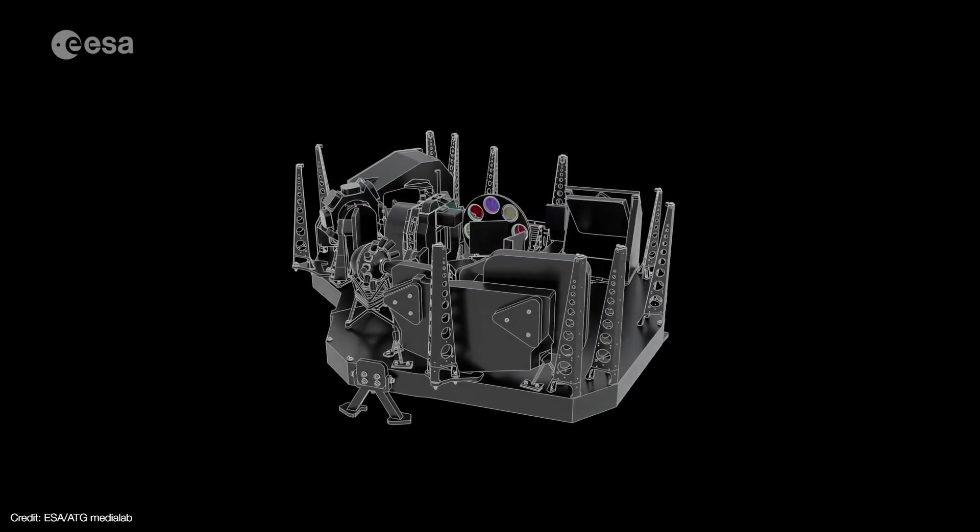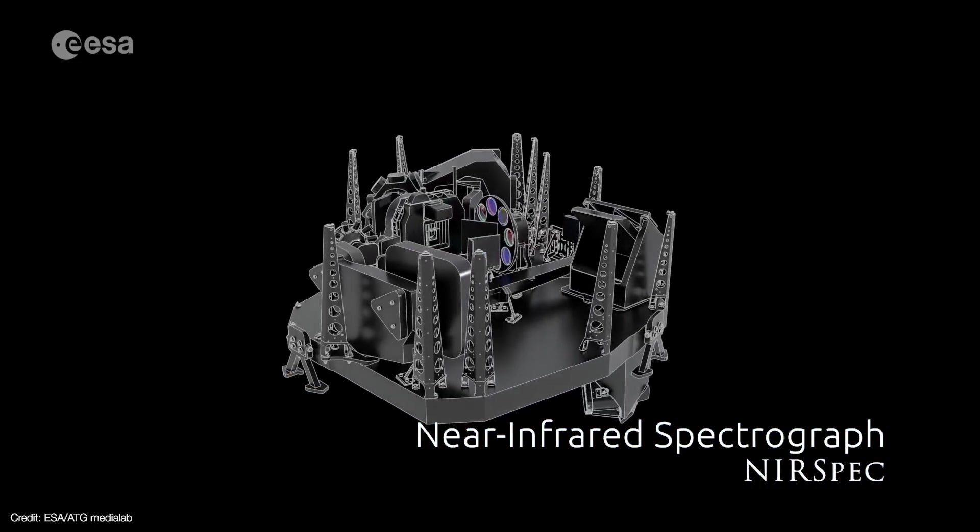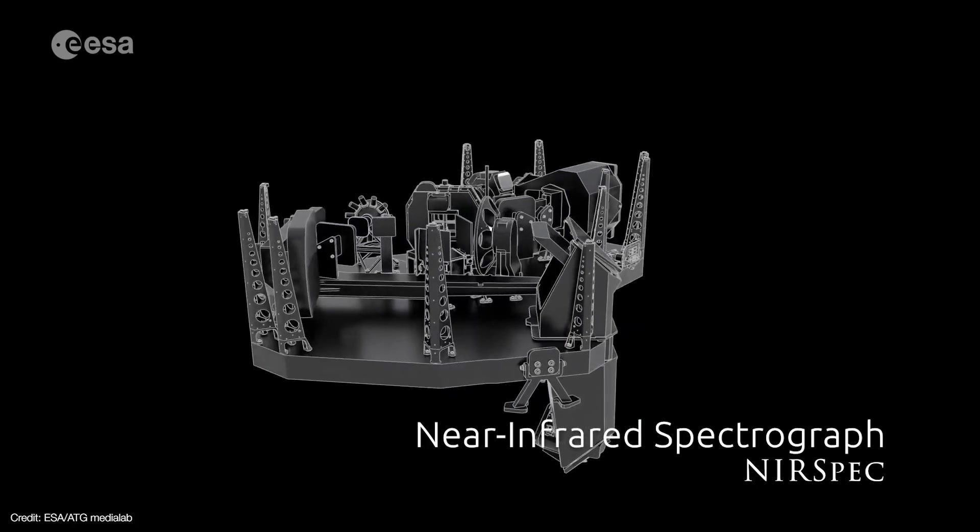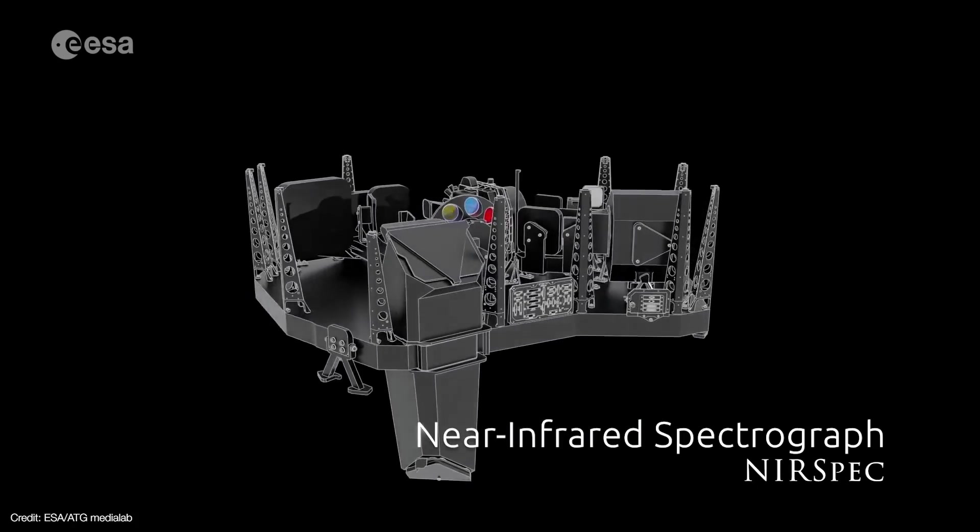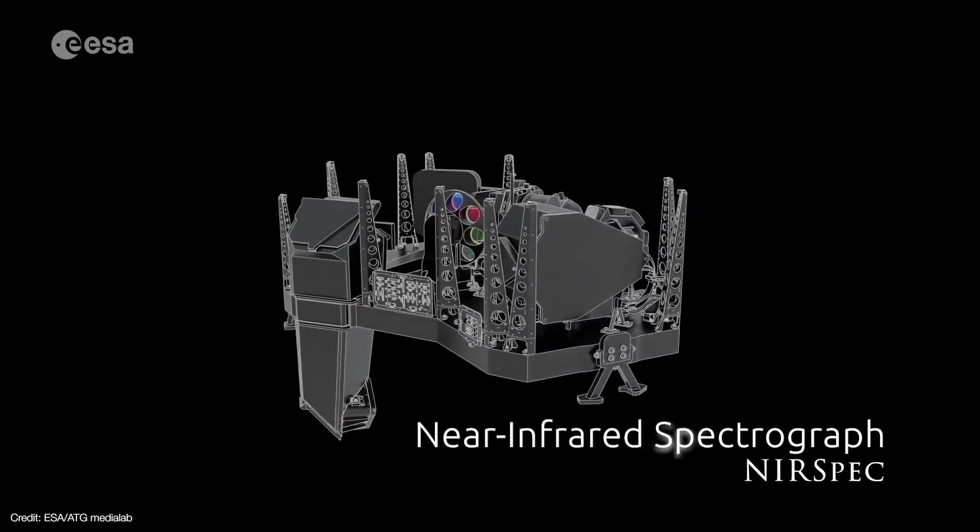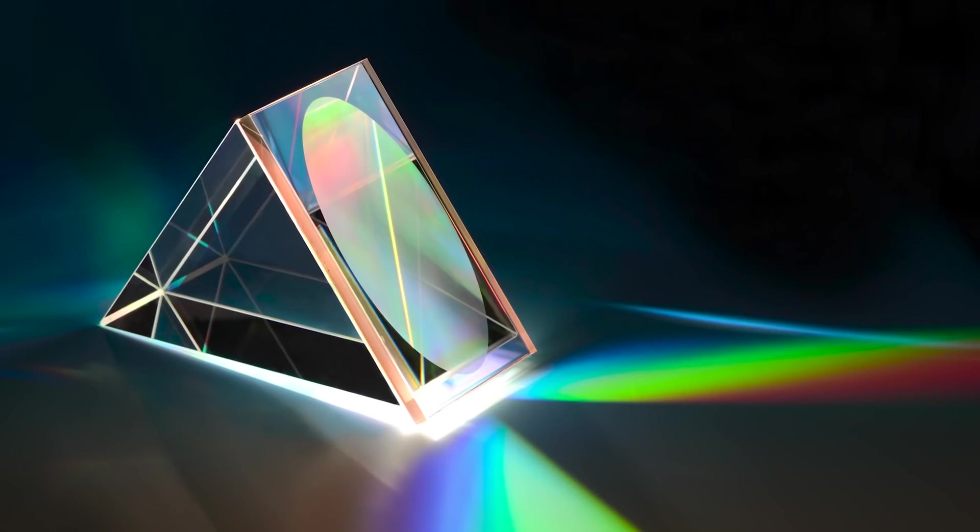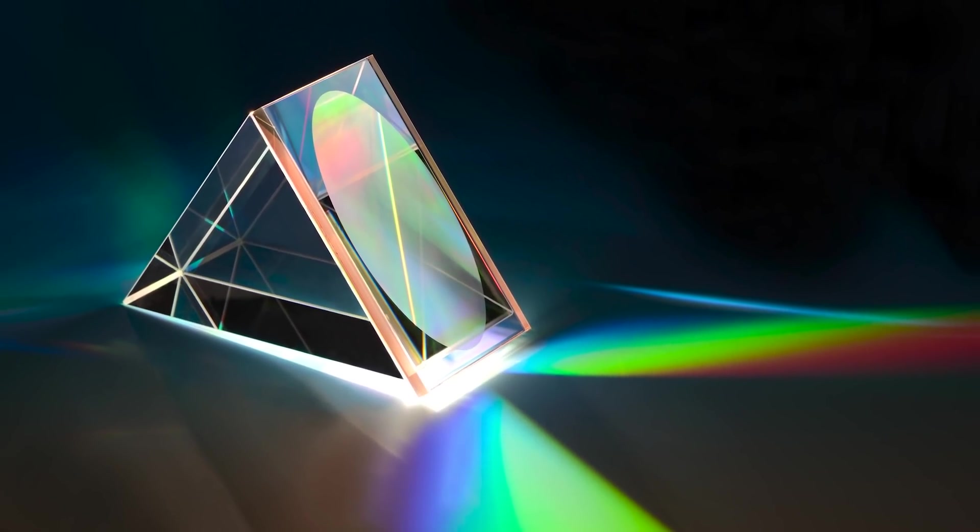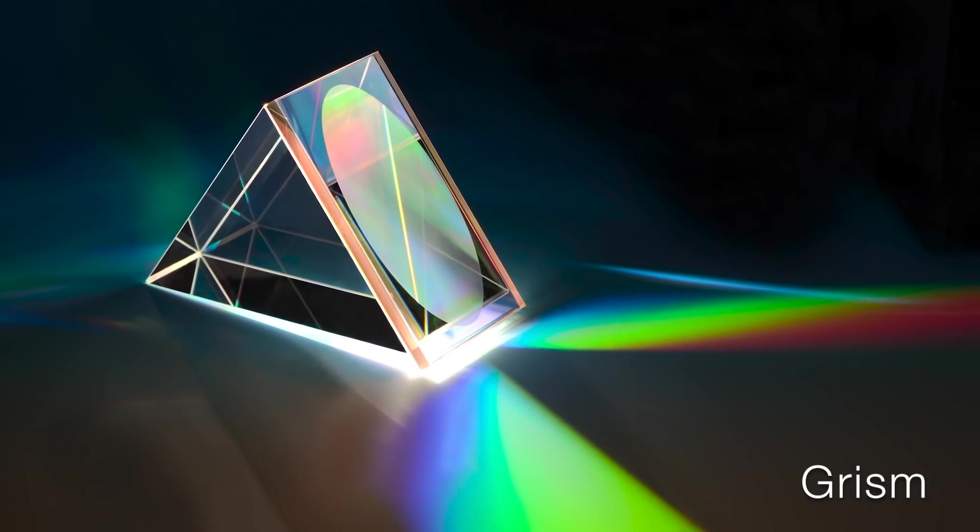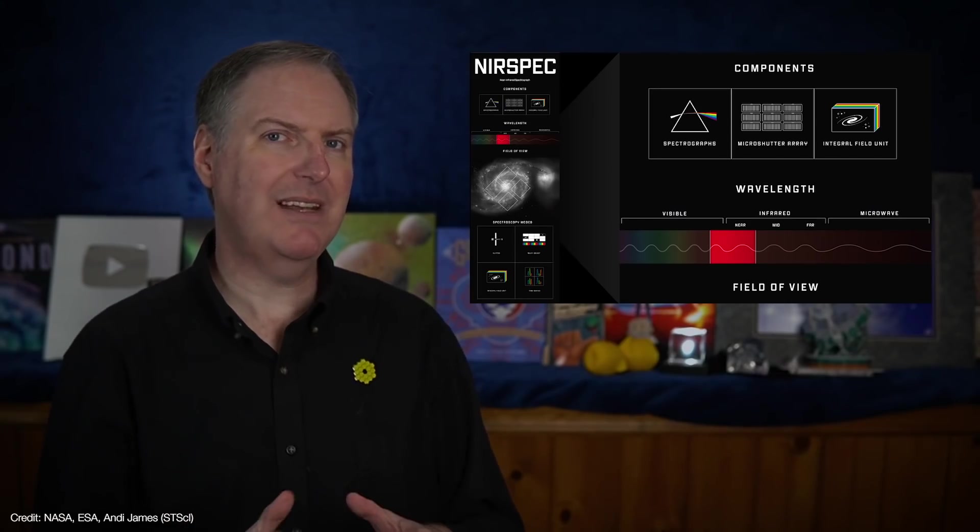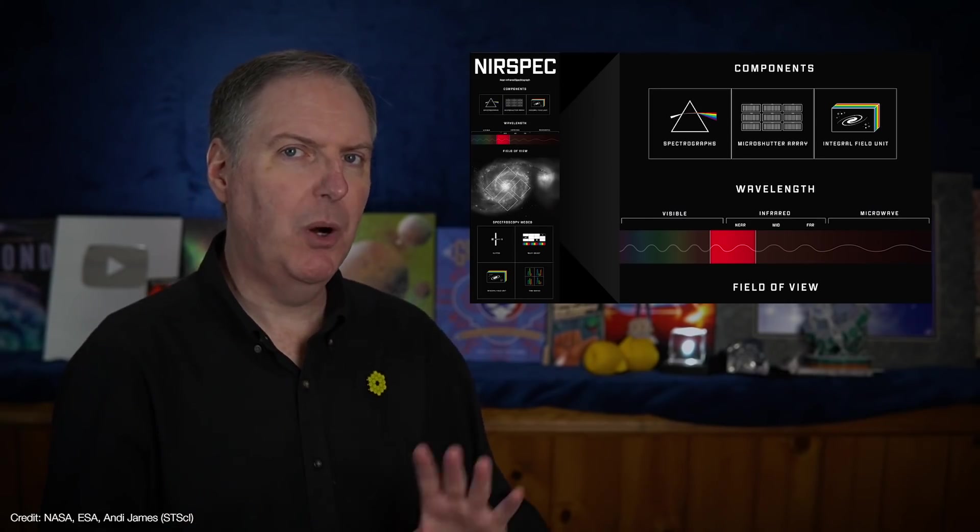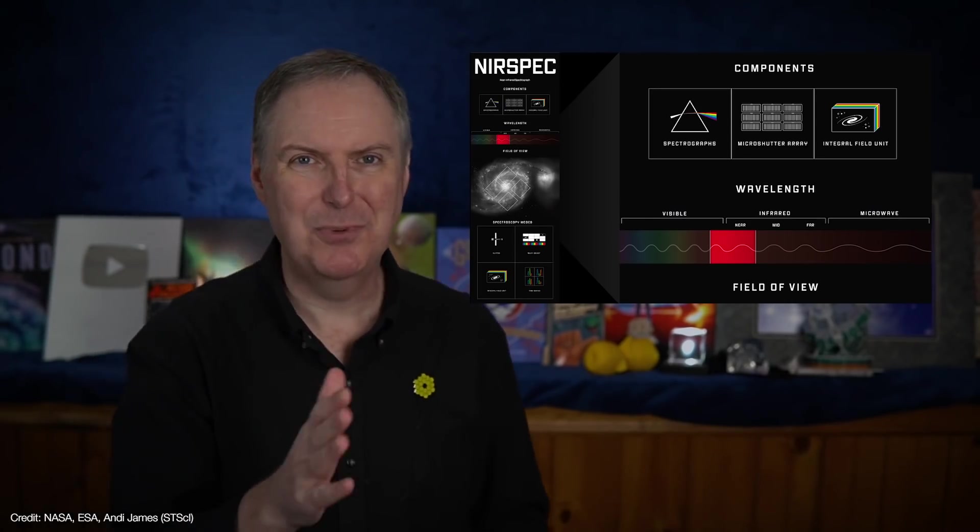But if NIRCam is Webb's workhorse camera, NIRSpec is Webb's workhorse spectrograph. Spectrographs work by passing light through a prism or reflecting it off of a diffraction grating. In fact, most spectrographs use a combination element called a grism for this very purpose. But NIRSpec carries a fundamental technology that takes spectroscopy to a whole new level. Let me show you how this works.